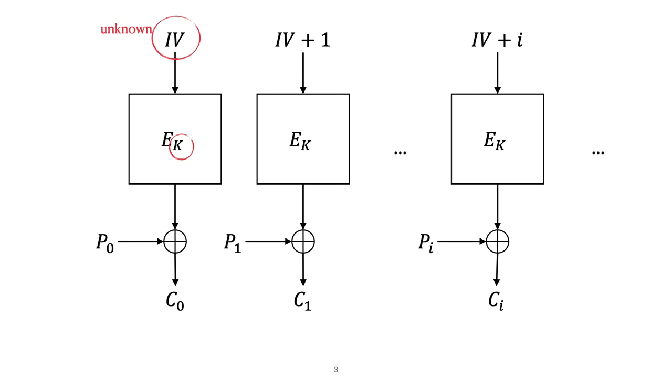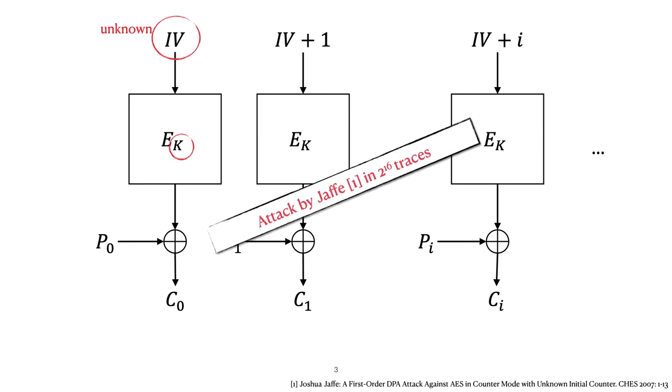This scenario was considered in a previous work by Jaffe and he managed to recover both the key and nonce from 2 to the power 16 power traces using only the information in those traces.